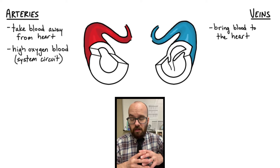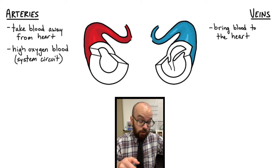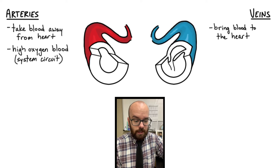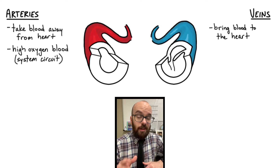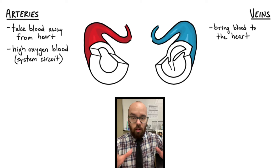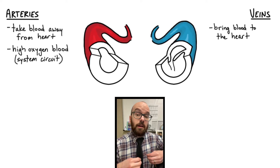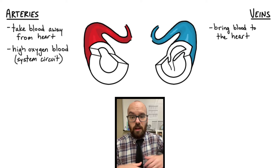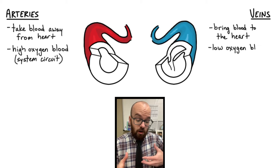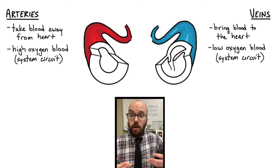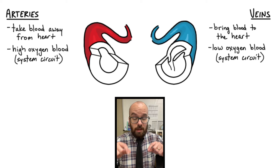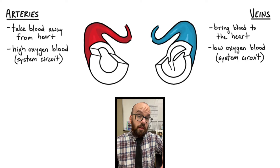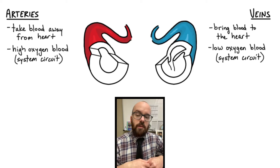The pulmonary artery and pulmonary veins are an exception to this rule. The pulmonary artery is the one artery that takes low-oxygen blood away from the heart to the lungs. All other arteries in the body are carrying high-oxygen blood out to the cells. Conversely, veins are always carrying low-oxygen blood except for the pulmonary vein, which carries high-oxygen blood back to the heart. All other veins carry low-oxygen blood that's already gone out to the cells back to the heart.